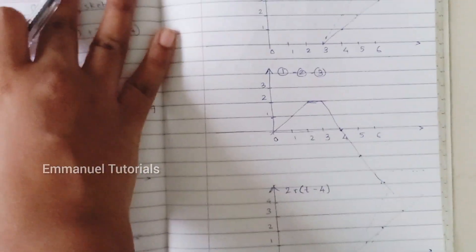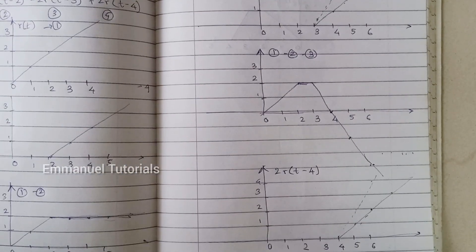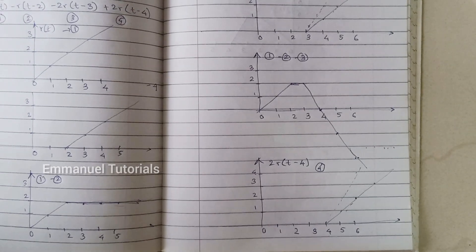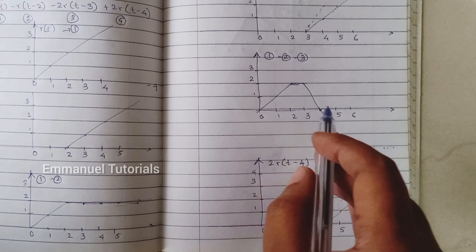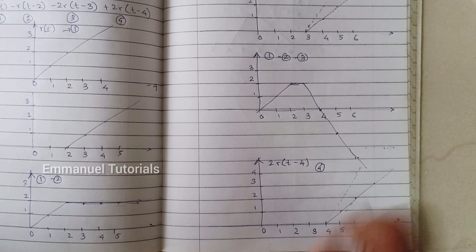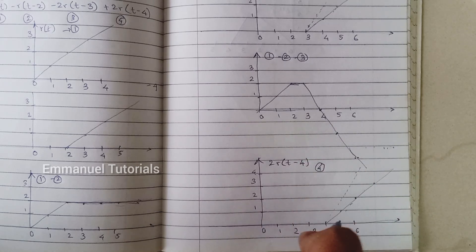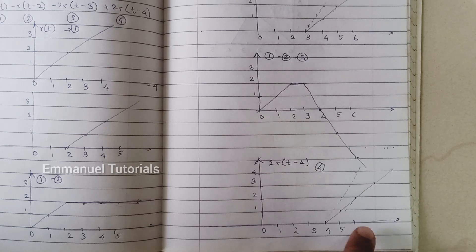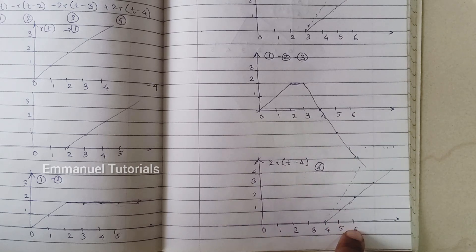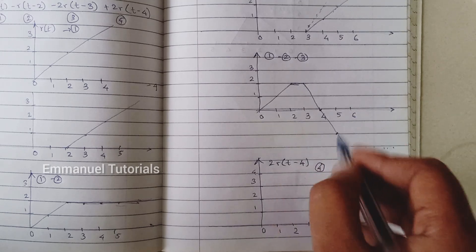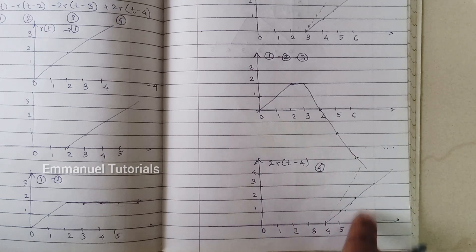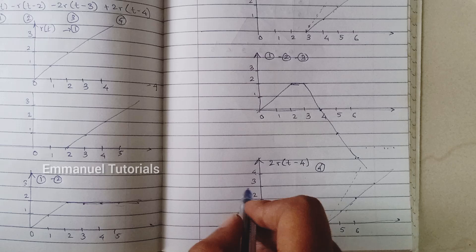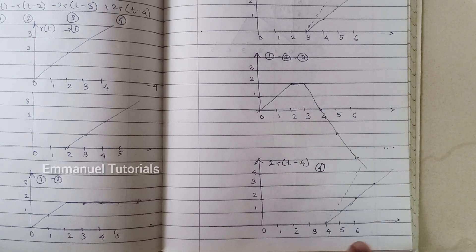Looking at both signals — parts 1−2−3 and the fourth part — from 0 to 4 the fourth signal's amplitude is 0, so the result keeps the same shape. From 4 to infinity the two signals are mirror images of each other: at T=5, first is −2 and second is +2; at T=6, first is −4 and second is +4. Adding −2 and +2 gives 0, adding −4 and +4 gives 0, and this cancellation continues to infinity. So from 0 to 4 we have the combined ramp-step-ramp shape, and from T=4 onwards the signal is 0.